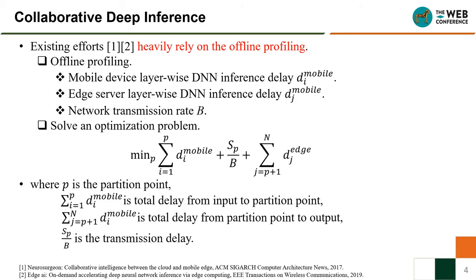The existing efforts heavily rely on offline profiling. They profile the layer-wide DNN inference delay on the mobile device, the layer-wide DNN inference delay on the edge server, and the network transmission rate. Then, according to these offline profilings, they solve an optimization problem to find an optimal partition point.